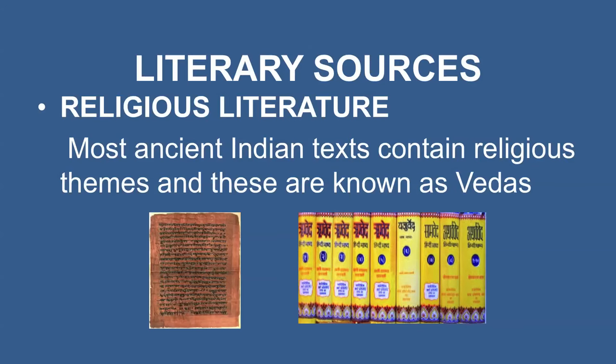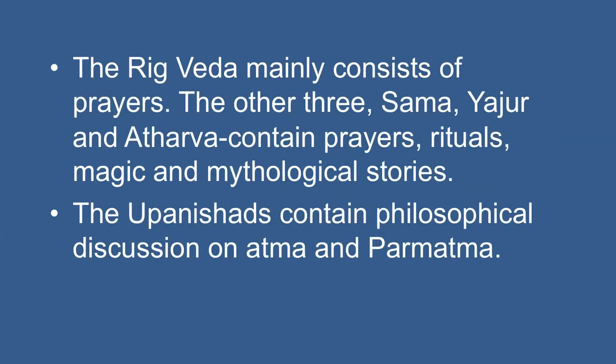Most ancient Indian texts contain religious themes and these are known as Vedas. The Vedas are four in number: the Rig Veda, the Sam Veda, the Yajur Veda and the Atharva Veda, which contain prayers, rituals, magic and mythological stories. The Upanishads contain philosophical discussion on Atma and Paramatma, and are also referred to as Vedanta.